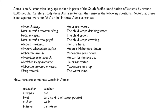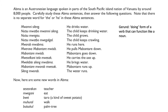I noticed that the entire first sentence is included in the second one in exactly the same form. The first one is 'he drinks water,' and the second one is 'the child keeps drinking water.' What this tells me is that verbs here keep their original form when they become gerunds. If you don't know, a gerund is a doing form of a verb that can function like a noun in a sentence. For example, 'drinking' in the second sentence is a gerund.